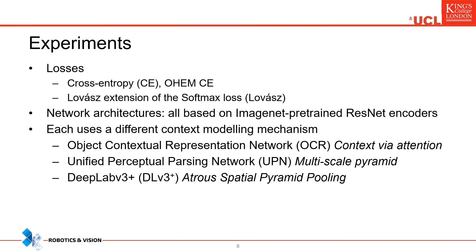Furthermore, we assess the importance of other factors. We experiment with the use of different loss functions and network decoders on top of a standard ResNet backbone. The Lovász loss is a surrogate for the Jaccard index that allows us to more directly optimize for the mIOU metric used to quantify results.